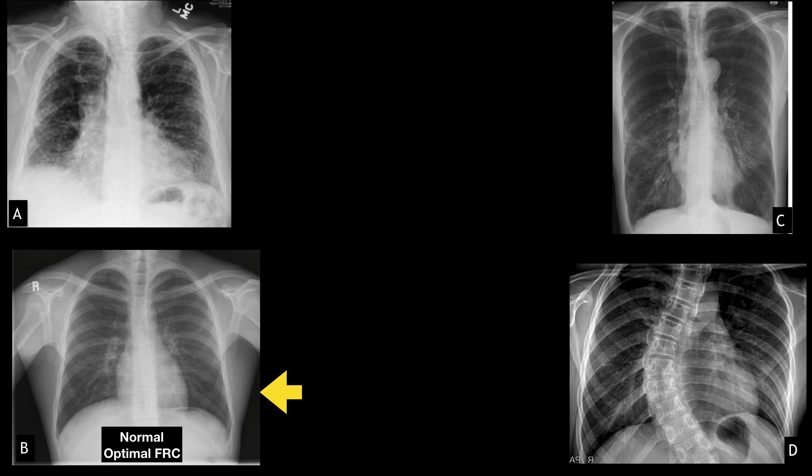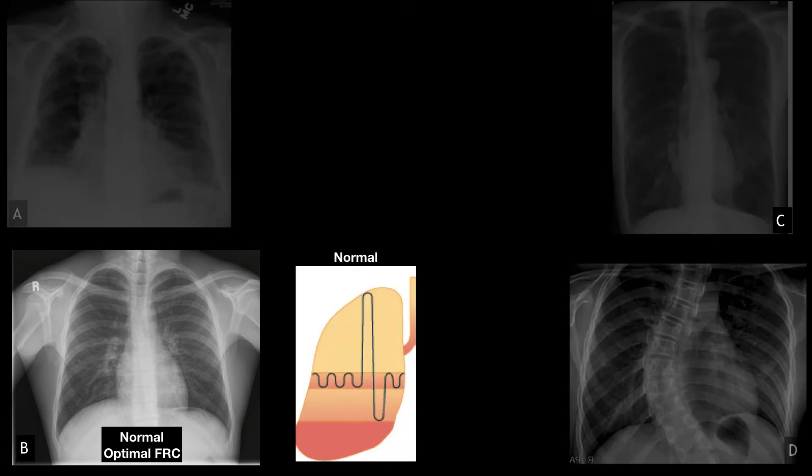Here is an example of all those tidal volumes. Functional residual capacity is the remaining volume in your lungs after normal tidal volume.